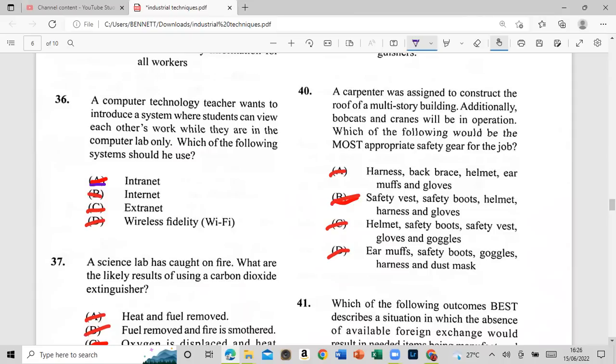A carpenter was assigned to construct a roof of a multi-story building. Additionally, the buckets and clean will be, will be in operation. Which of the following would be the most appropriate safety gear for the job? A: harness, back-raised helmet, earmuffs, and gloves. B: safety vest, safety boots, helmet, harness, and gloves. C: helmet, safety boots, safety vest, gloves, and goggles. D: earmuffs, safety boots, goggles, harness, and dust masks. D: earmuffs, safety vest, helmet, harness, and gloves. All right.